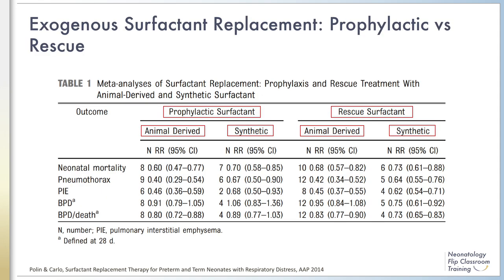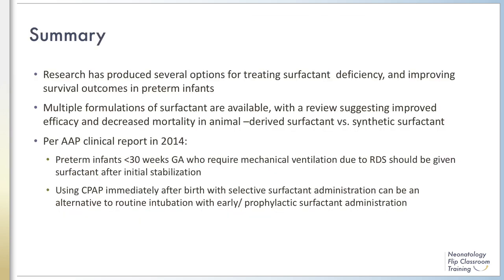Per the recent update of the American Academy of Pediatrics surfactant administration guidelines in 2014, systematic reviews of randomized controlled trials continue to demonstrate that surfactant administration — either animal-derived or synthetic formulations — in preterm infants reduces the risk of chronic lung disease or death at 28 days of life. However, these benefits are not evident in all patients, particularly in those receiving non-invasive ventilatory support.